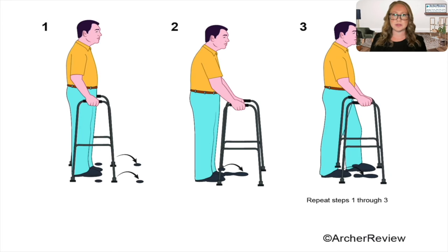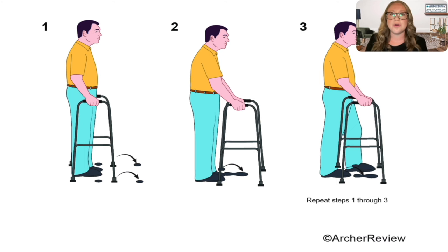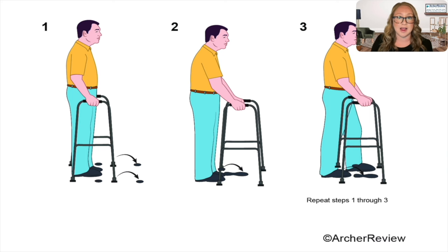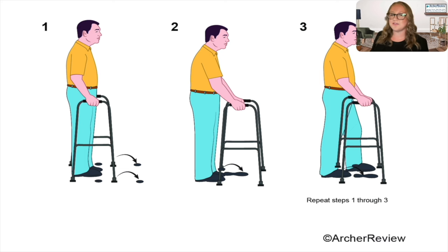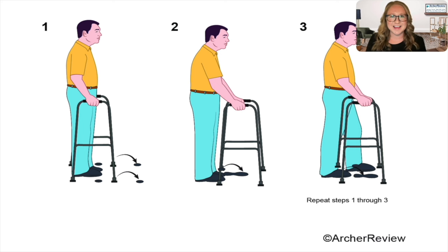Here's our client. They're standing up nice and tall in the center of their walker. It slides forward, all four feet on the ground. It looks like their left side is their bad side, their affected side. So their affected side goes forward and then their unaffected side goes up to meet it. Rinse and repeat — walker, bad leg, good leg — over and over.